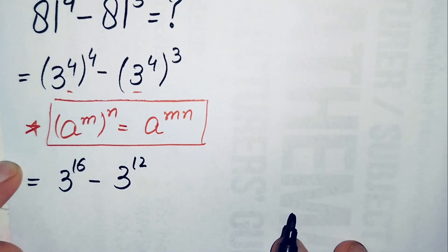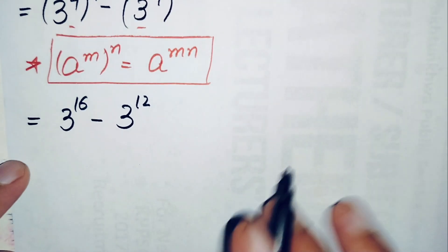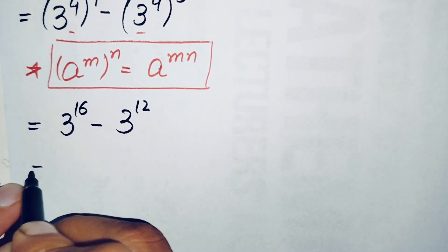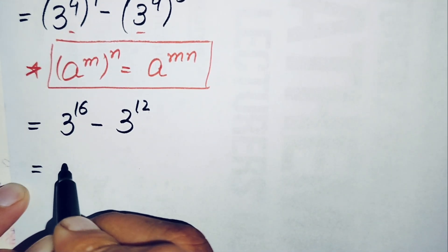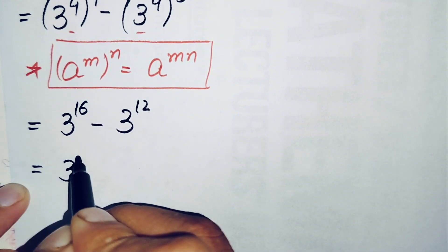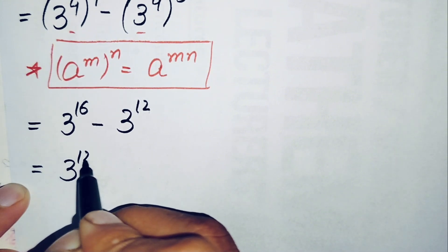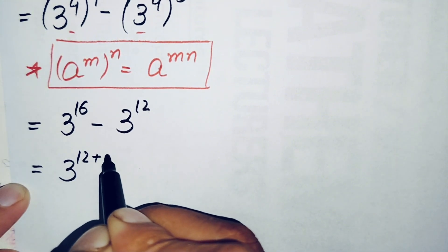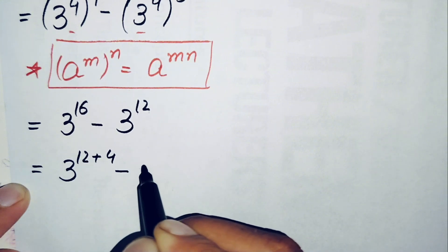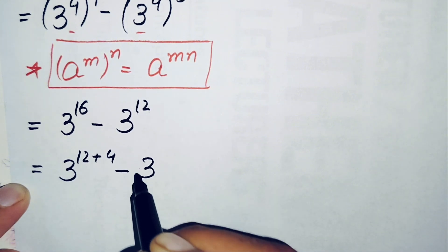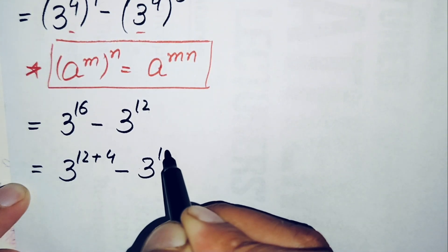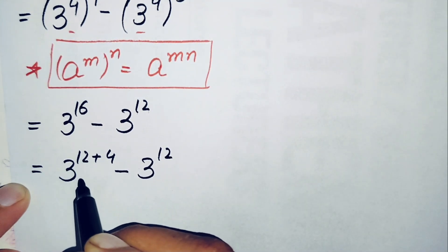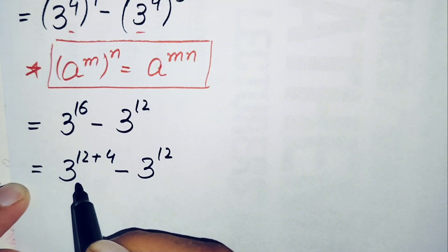Next, we rewrite 3 raised to power 16 as 3 raised to power 12 plus 4, giving us 3 raised to power 12+4 minus 3 raised to power 12.